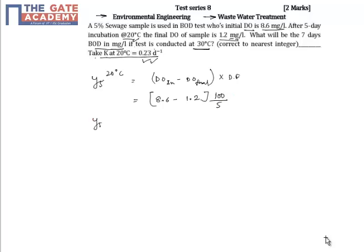Y5 at 20°C is also given as L0(1 - e^(-KT)). Putting the values, we get L0(1 - e^(-0.23×5)), where K is 0.23 per day and T is 5 days. Equating equations 1 and 2, we get L0 equal to 217 mg/L.